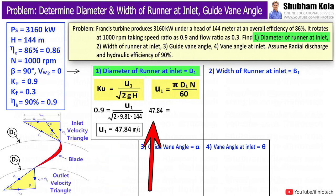So, from calculated value of U1, we will solve for D1. Therefore, we got value of D1, i.e. runner diameter at inlet, as 0.914 m.